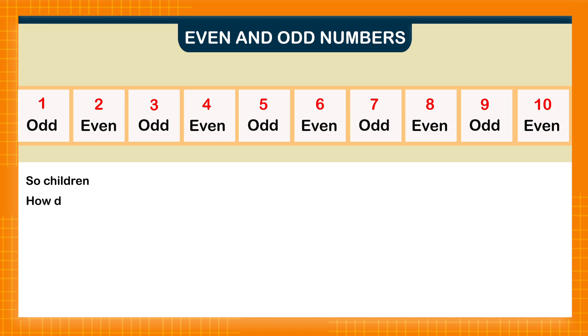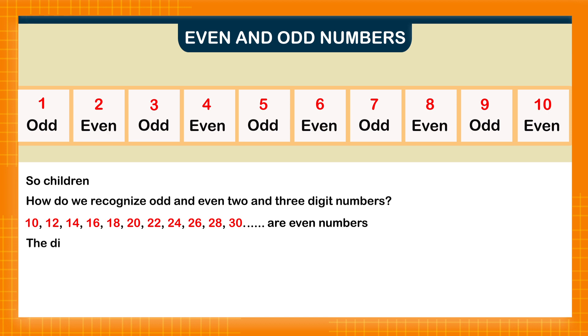So children, how do we recognize odd and even two and three digit numbers? We know that 10, 12, 14, 16, 18, 20, 22, 24, 26, 28, 30 are even numbers. The digit in the ones place in even numbers is 0, 2, 4, 6, or 8.